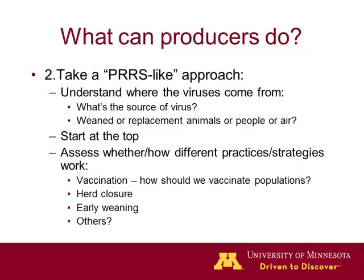I want to convince you that for flu, we are behind PRRS in understanding epidemiology and control of influenza, and we have to take a PRRS-like approach. We need to understand where the viruses come from. One advantage with influenza, different from PRRS, is that viruses will die out fairly easily as long as we don't introduce more. Understanding what happens at the sow farms and at the gilt level is point number one — to produce negative pigs at weaning and minimize the amount of virus in the post-weaning period, along with strategies like herd closure, early weaning, or piglet management prior to weaning.